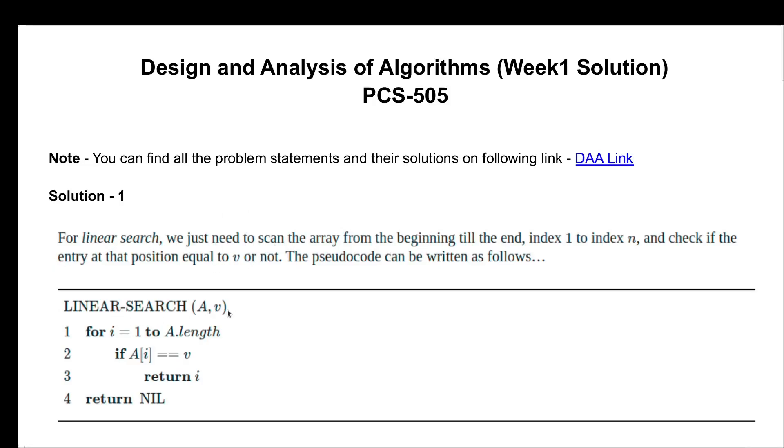The pseudo code for linear search is this: we are going to search from 1 to the length of the array, and if a key element is equal to array element we need to return that particular element or index of that particular element, otherwise you can return nil or minus 1 in our case.